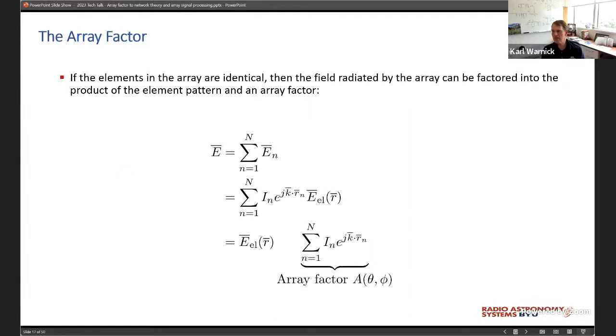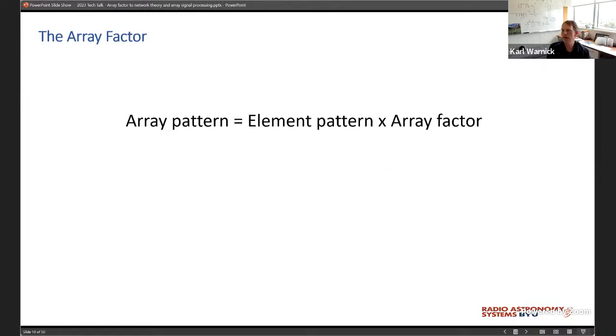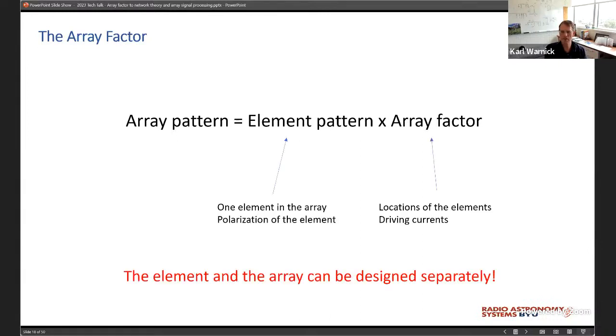So first, the array factor method. In the array factor method, we take the field radiated by each element and add that. And then we make an approximation. We mathematically factorize that into the field that one antenna in the array would radiate, multiplied by an array factor that accounts for the geometry of the array. Very powerful. The approximation we make is we assume that all the elements are identical and in the same environment in the array. That's not true for edge elements versus interior elements. The philosophy there is we've decoupled the array analysis problem into designing the element and designing the geometry of the array. So that's the whole point of the array factor method. That's why it's so powerful and so ubiquitous. It is approximate, but very powerful.